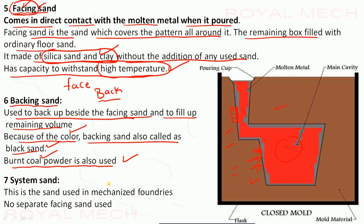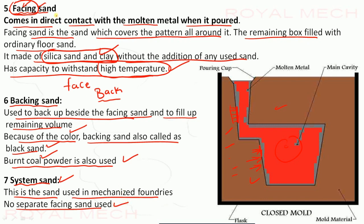System sand is used in mechanized foundries. In mechanized or automatic foundry operations, there is no separate facing sand — the same sand is used throughout — and that sand is called system sand.